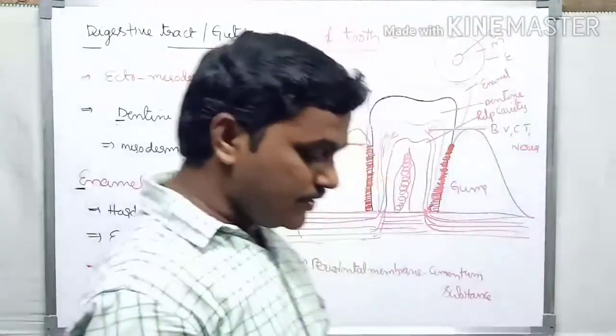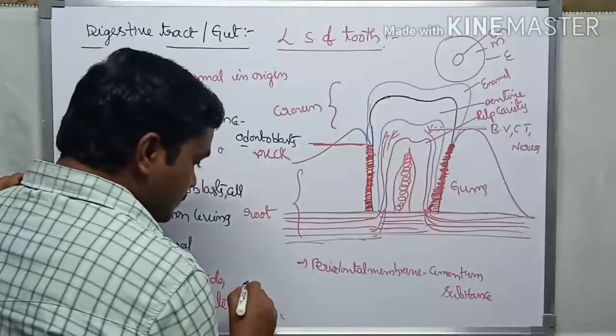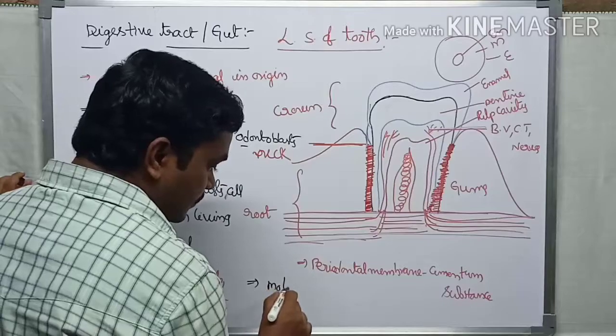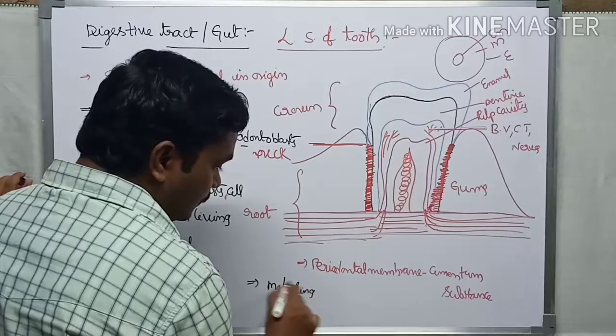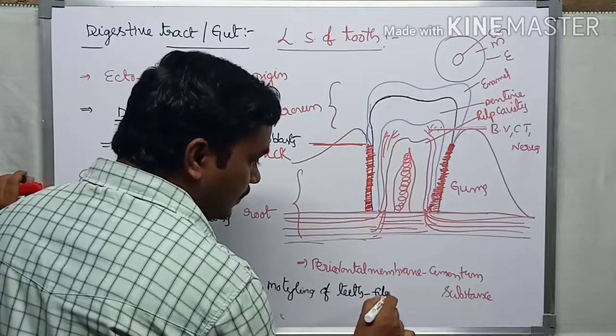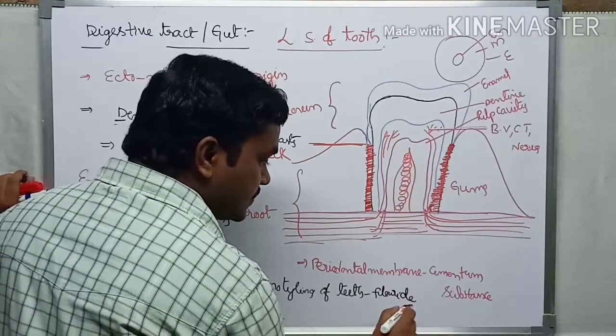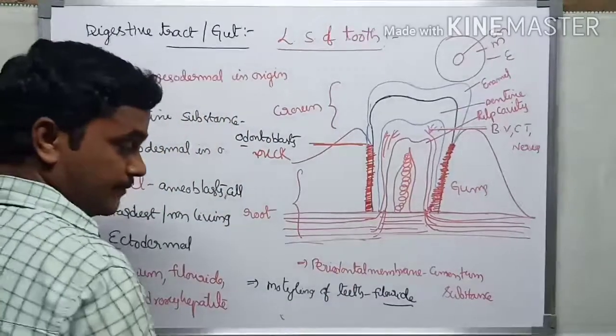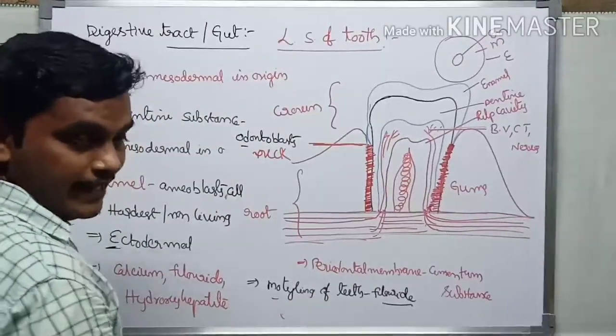This yellowing of teeth happening, that process is called mottling, mottling of teeth. It means excess of fluoride. So fluoride substance is required, but if it's more, automatically mottling of teeth happens.